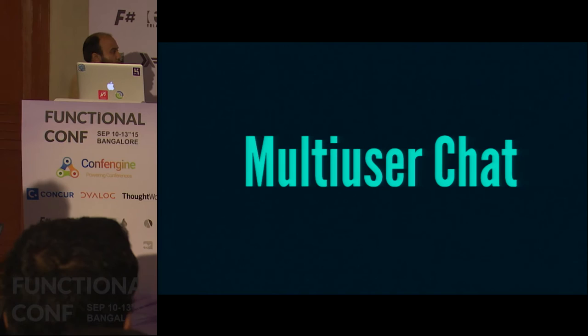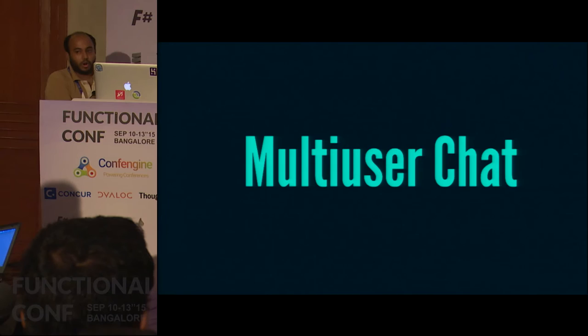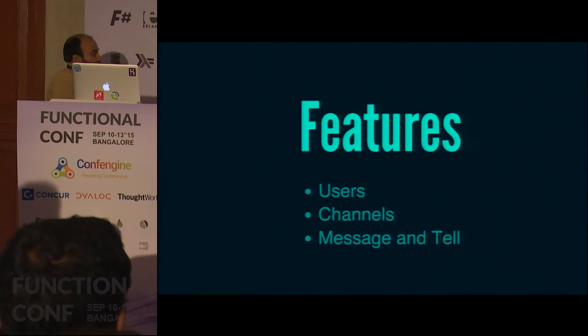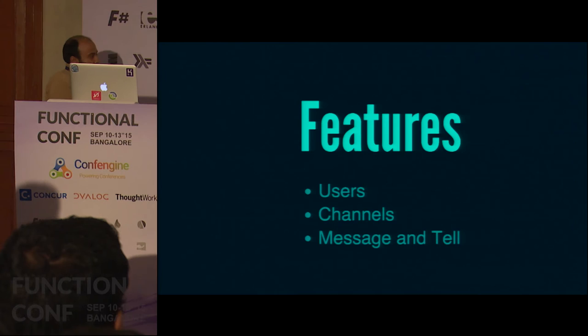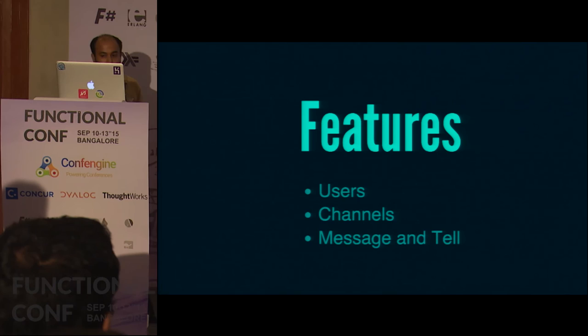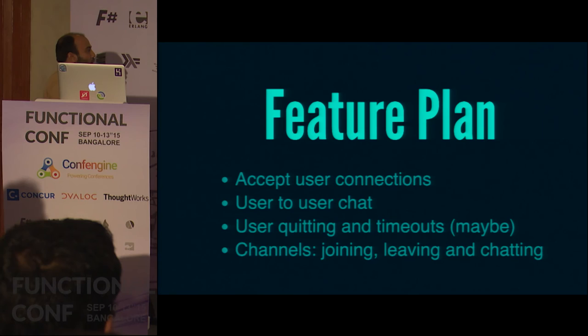To demonstrate the tools, we're going to write a multi-user chat server, which is a typical example of a concurrent program. The features are sparse: users should be able to log into the chat server and send private messages to each other, which I call 'message'. There will also be channels in the server which multiple users can join and talk in; when you talk in a channel everyone else in the channel gets a notification, which I call 'tell'. So we're going to have only two features.